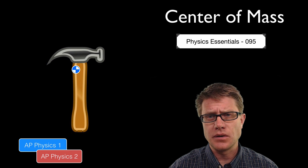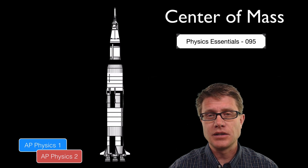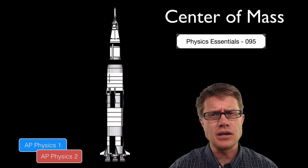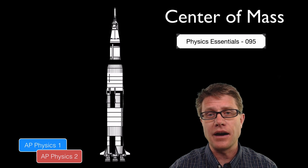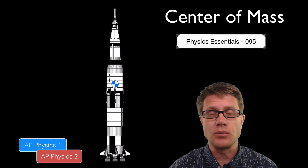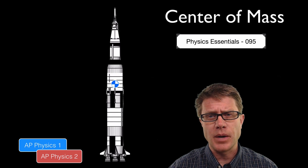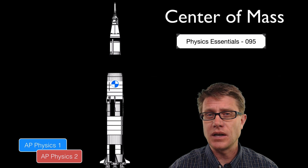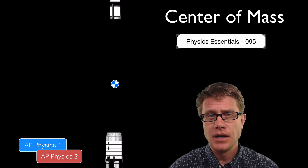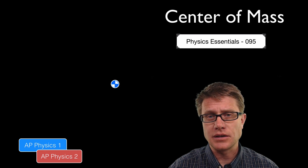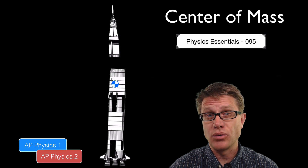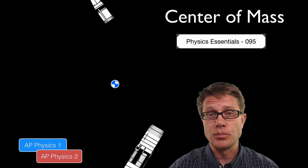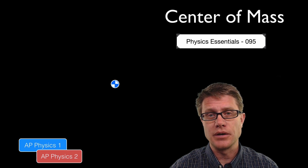Now let me show you a system. This is a Saturn V rocket made up of a number of different stages. Where would you say the center of mass is? Maybe somewhere like that. What would happen to the center of mass if I were to break this rocket apart into its two stages? It will stay in the same location. If we do not have an external force acting on the system, the center of mass stays where it is, even though there might be rotational motion as we break those stages apart.